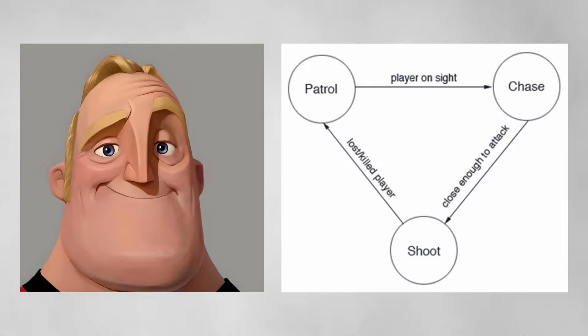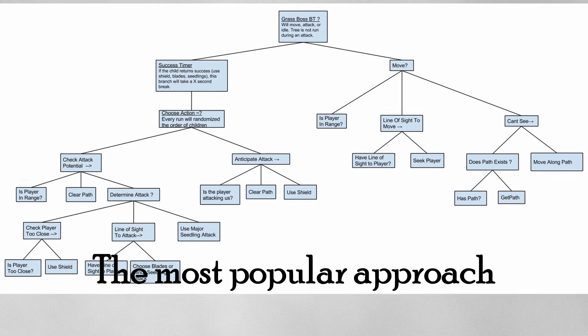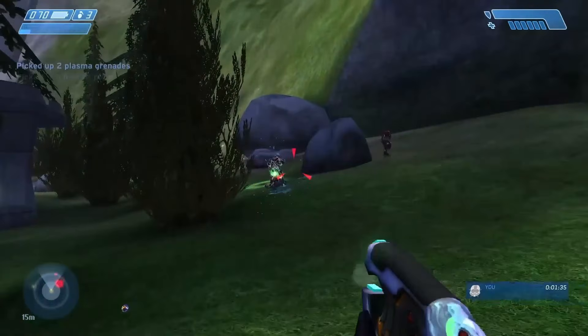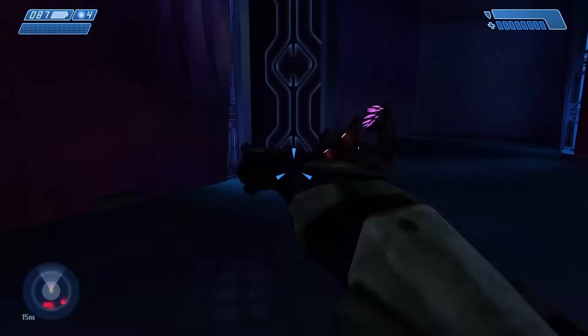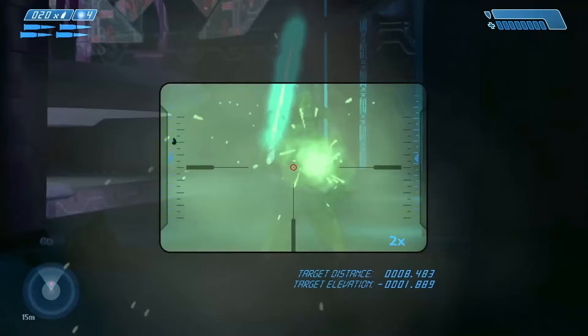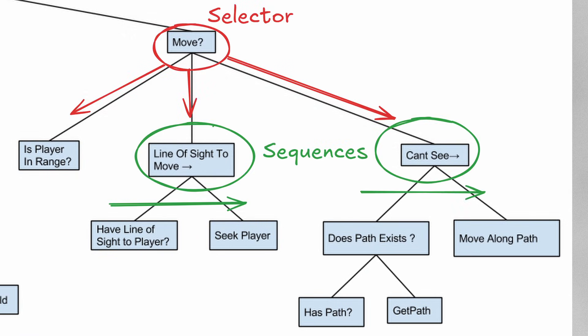Simple state machines start to break down when you're making more complex characters or trying to do anything immersive. To address this, the most popular approach is to use behavior trees. I think one of the first games to incorporate behavior trees was Halo, and the behavior trees allowed the developers to make realistic-feeling Covenant squads that were challenging and lifelike. Behavior trees are also comprised of states, but are organized into a tree structure to organize control flow, and some helper nodes like sequences and selectors make the control flow easier.